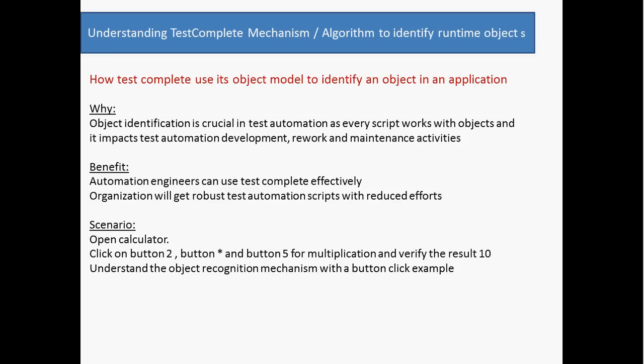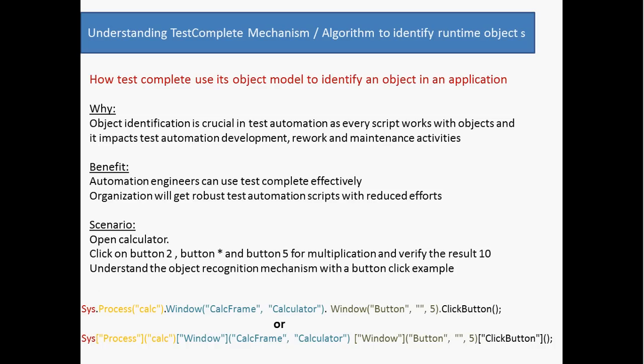Assume that in this scenario, there are some Internet Explorers, notepads, and two calculators already open. TestComplete recorded the script on the second calculator and has to play it back again on the second calculator. When it clicks a button, the following script is recorded.